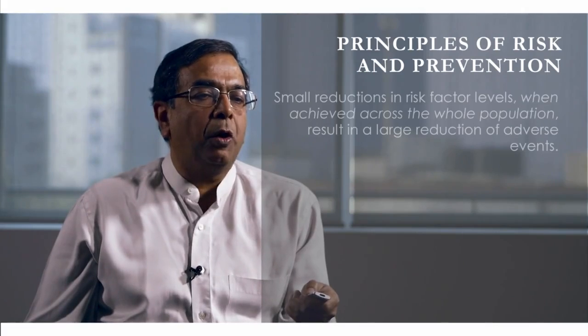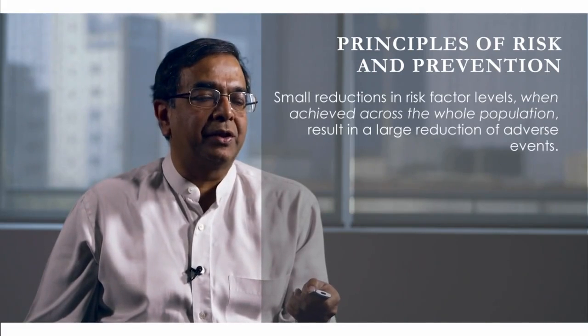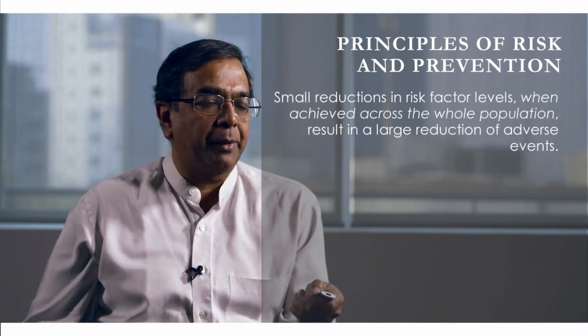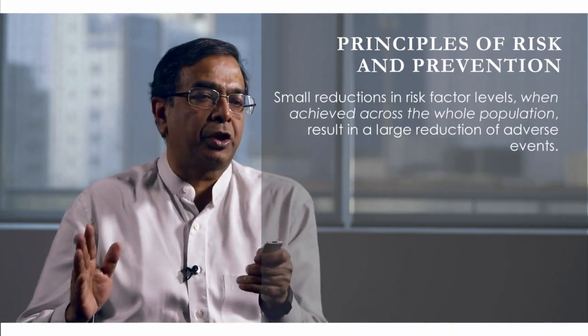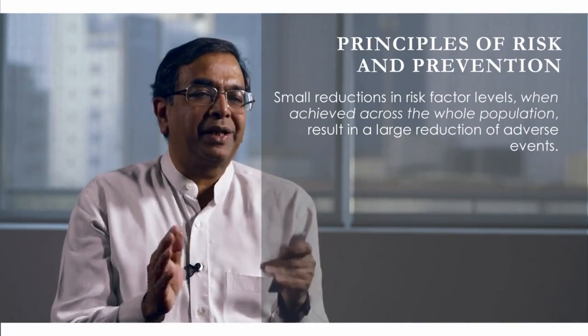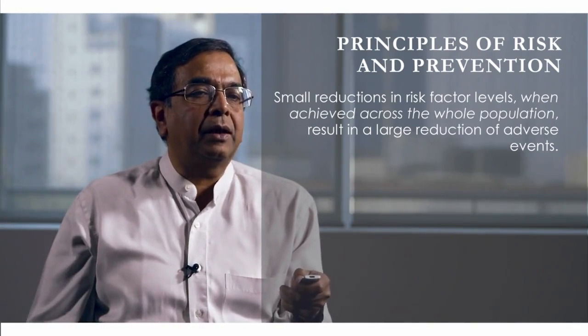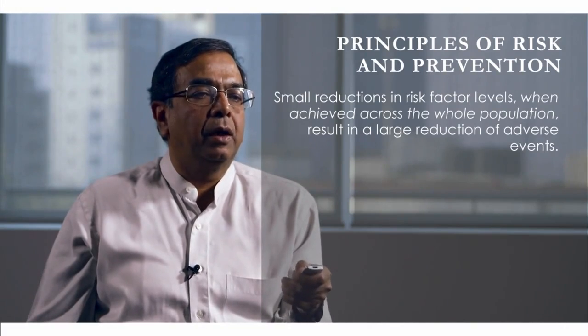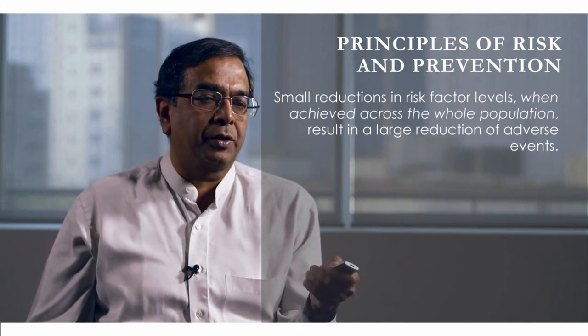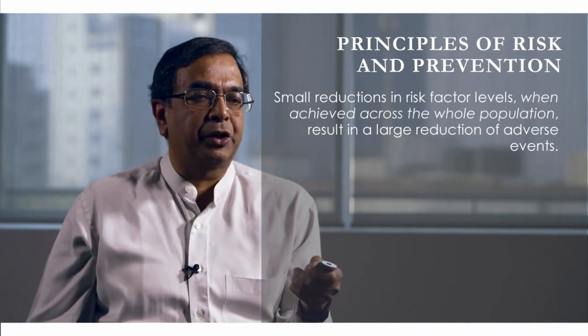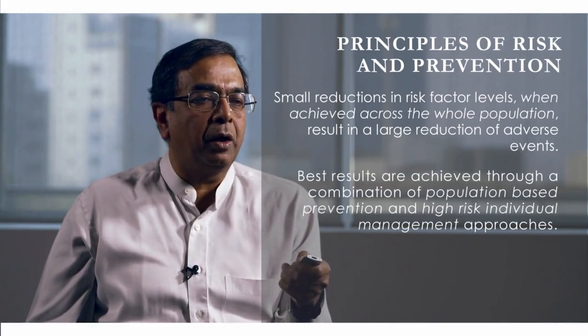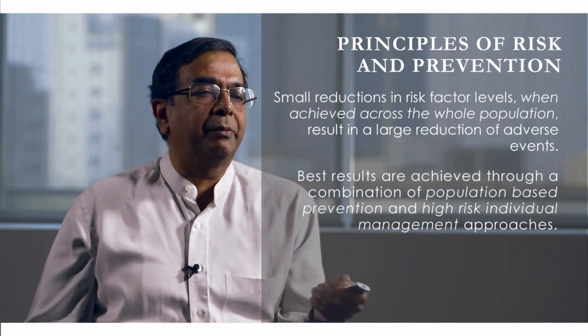When we look at the principles of risk and prevention, we understand that since much of this is determined by the population profile of a risk factor, small reductions in risk factor levels achieved across the whole population — when the whole population distribution shifts to the left, shifts to a better level — result in a large reduction of adverse events like strokes and heart attacks across the population. Even though individual shifts are small, cumulatively the population benefits are large.